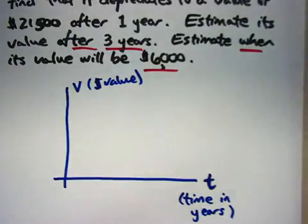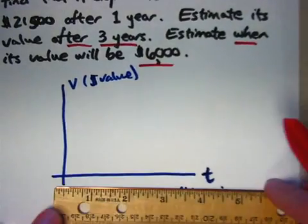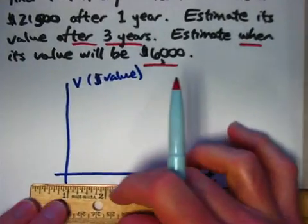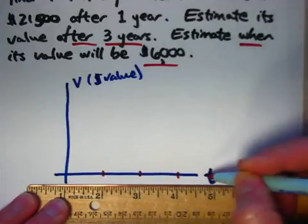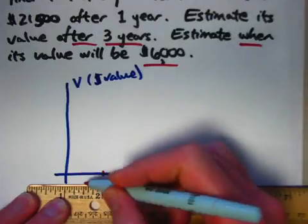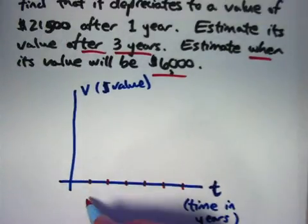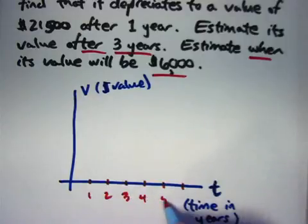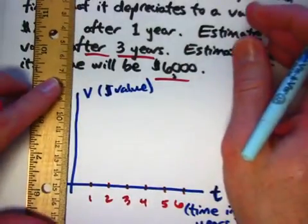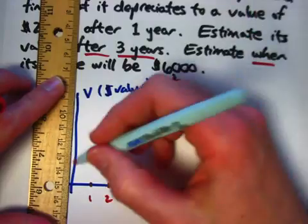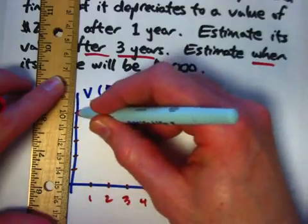All right, let's get some scales on the axes here. My ruler to help me - you don't always have to use a ruler, but it's nice to when you can to try to make things as accurate as possible. I'll make one inch be the years, well maybe I better make half an inch, so half an inch is one year: one, two, three, four, five, six. The value starts up at $25,000.